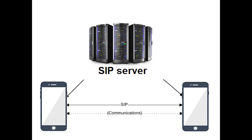SIP does numerous things like help with name translation and use a location to ensure a call reaches the intended party, negotiate features to ensure agreement is made since not all features may be supported, manage call participants like putting someone on hold or holding a group call, and allow negotiation of media and enable the appropriate codec for establishing a call.